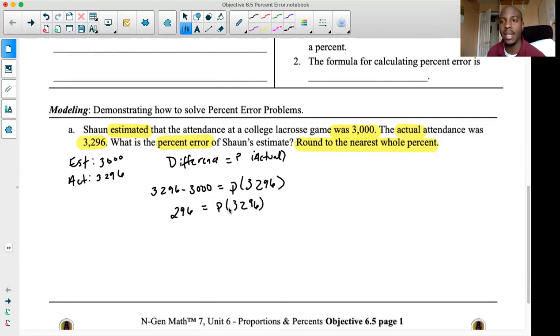Now there's only one more step to find the percent error. That last step is to divide because we want to get P by itself. Remember when we solve one-step equations, we want to get the variable by itself and we say, what's next to the variable? In this case it's 3,296. Let's divide both sides by that. And we end up getting the percent error is equal to this very small decimal, 0.089. But remember, this is a decimal. We do need to turn it into a percent. So we're going to move that decimal over two spaces to the right. We get 8.9, but because they want us to round to the nearest whole percent, let's just say 9%. That is the percent error here. Percent error is 9%.